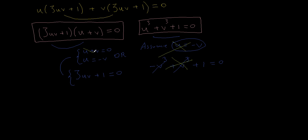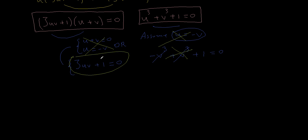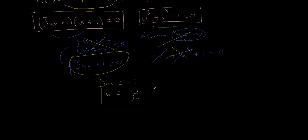Our only remaining option is 3uv + 1 = 0, so 3uv = -1, and dividing both sides by 3v gives u = -1/(3v). Let's box this equation. Now we substitute u = -1/(3v) into the equation u³ + v³ + 1 = 0, giving (-1/(3v))³ + v³ + 1 = 0, which is -1/(27v³) + v³ + 1 = 0.